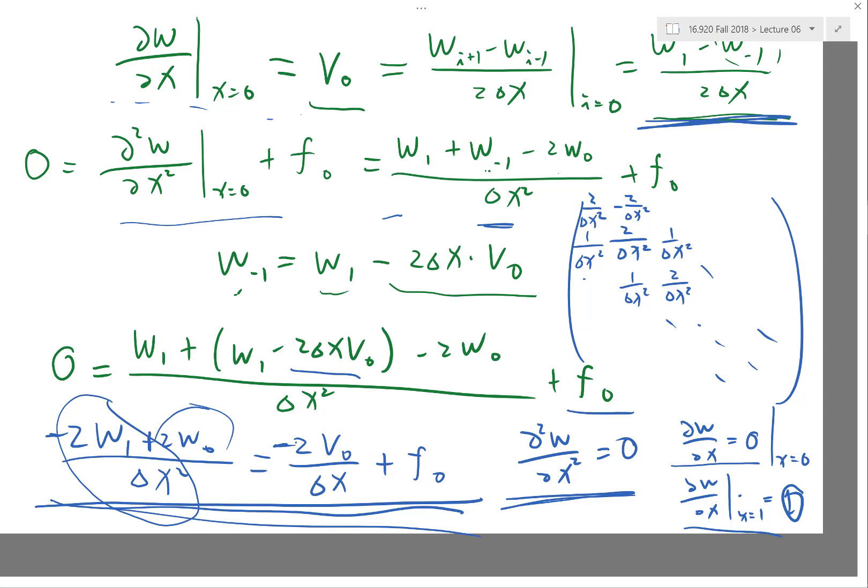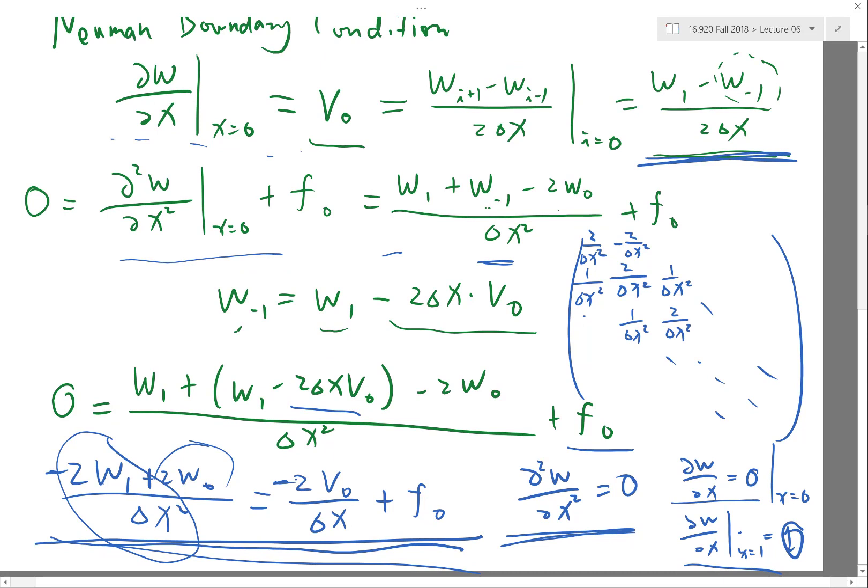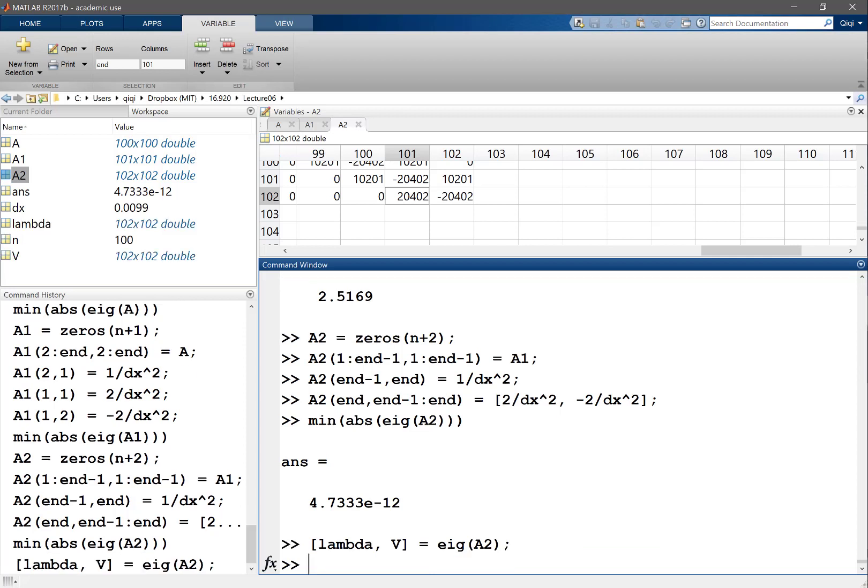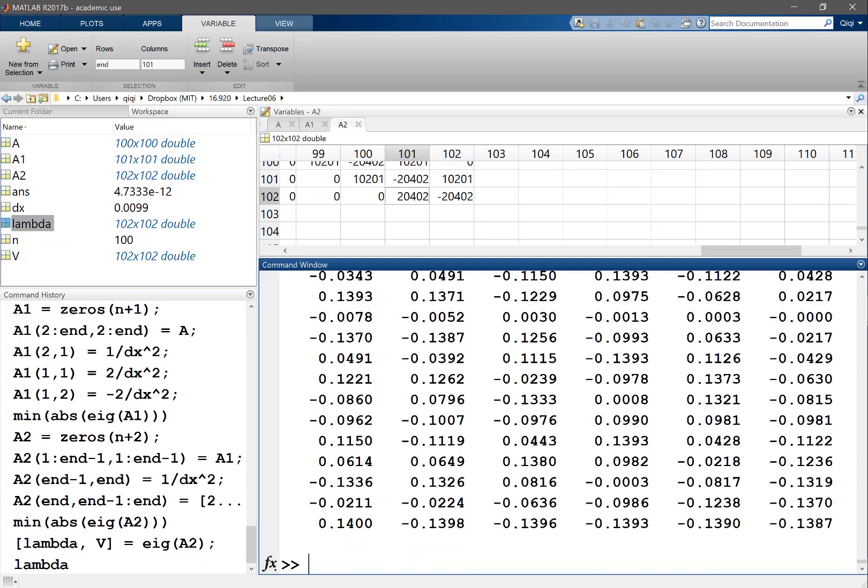And that eigenvector is actually the largest, corresponds to the largest eigenvalue. In here, we are looking at the largest eigenvalue of A inverse, right? Which is the smallest eigenvalue of A. We can also look at the corresponding eigenvector to figure out how it is going to go unstable. So in this case, the way it'll go unstable is actually pretty weird, because if you look at, okay, so if you look at lambda and V is equal to I of A2.